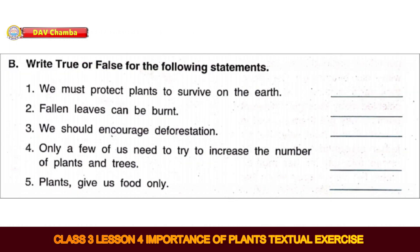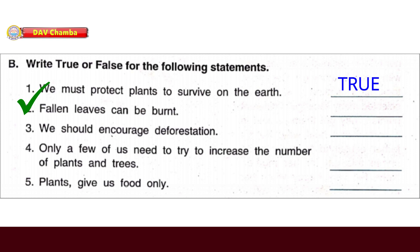Next, Part B — Write True or False for the following statements. First: We must protect plants to survive on the earth. It is True. Second: Fallen leaves can be burnt. It is False.